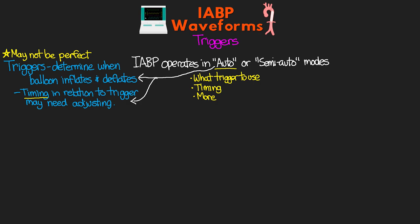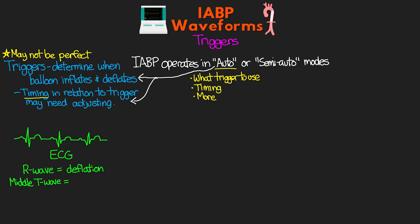There are a few ways to trigger the balloon pump. First and preferably is our ECG trigger. The balloon pump reads the ECG tracing and uses certain trigger points to initiate inflation and deflation. The R wave is our trigger for deflation — the heart is beginning to contract, so we want to deflate the balloon. The middle of the T wave is the trigger for inflation, as this roughly corresponds with when the aortic valve closes and we are in diastole.